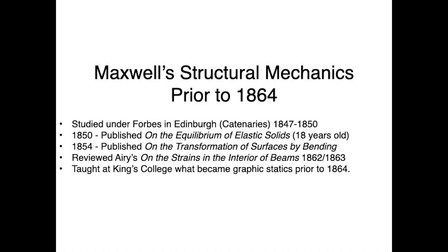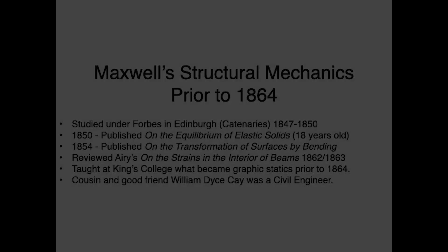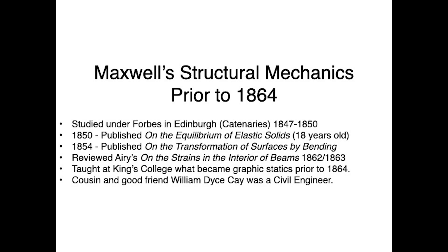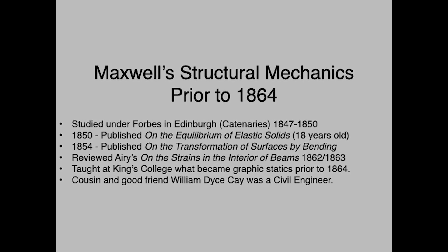Prior to 1864, he studied under Forbes at Edinburgh. He studied things like catenaries, so he knew the mathematics of that type of structure. When he was 18 or 19 years old, he published his paper on the equilibrium of elastic solids at the Cambridge Philosophical Society. And of course, in 1854, on the transformation of surfaces by bending.